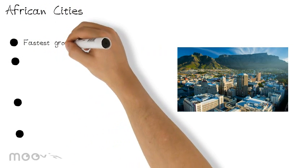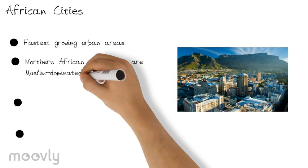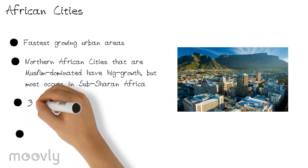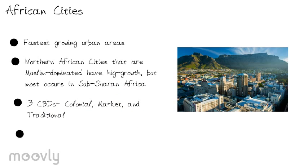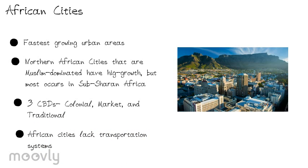African cities are the fastest growing urban areas in the world today, with most people coming in from the poor countryside to look for work. Cities in Northern Africa that are Muslim-dominated have a high growth rate, but most of the growth occurs in Sub-Saharan Africa. African cities have three distinct CBDs: the colonial CBD with government headquarters, a market or bazaar as the consumer section, and the traditional CBD which holds financial institutions and the commercial center. Ethnic neighborhoods extend outwards from the CBDs, and beyond them are mining and manufacturing zones as well as squatter settlements. African cities lack transportation systems due to lack of infrastructure or funding, and are also affected by high rates of HIV and large numbers of orphaned and homeless children.